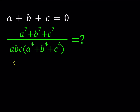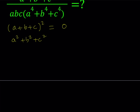The first thing I'm going to do is take a plus b plus c and square it. Since it's equal to 0, its square is also going to equal 0. Let's go ahead and expand it. We get a squared plus b squared plus c squared plus 2 times the quantity ab plus ac plus bc equals 0.